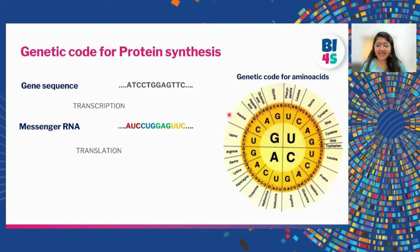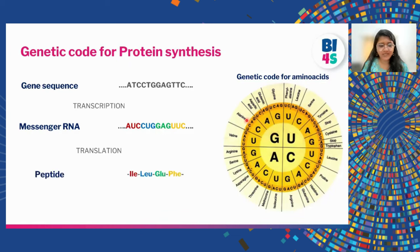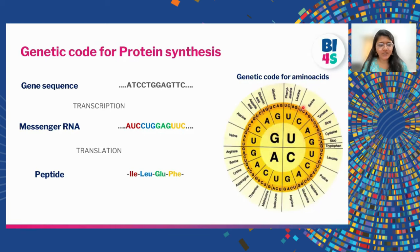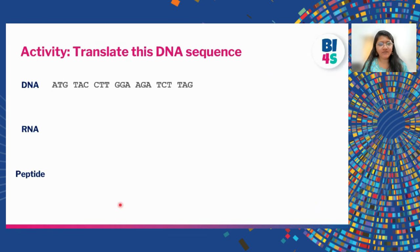For protein synthesis there are about 20 amino acids in a cell. You can make different combinations of RNA letters to decide which amino acid is placed. For example: AUC or AUC is isoleucine, CUG is leucine, GAG is glutamic acid, and UUC is phenylalanine. Let's do this together for one DNA sequence — the DNA is already divided into triplet codons.